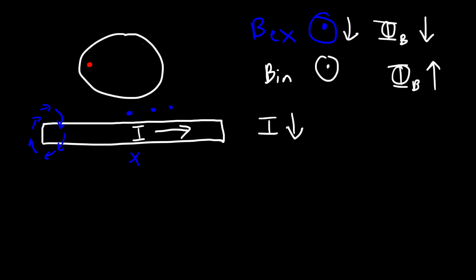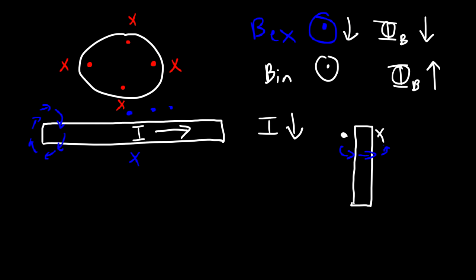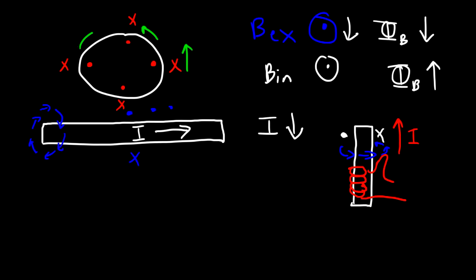So everywhere inside the coil, the induced magnetic field — shown in red — has to be coming out of the page, which means everywhere outside it's going into the page. Focusing on the left side of the coil: it's out of the page on the left, into the page on the right. The induced magnetic field needs to go in that direction. Using the right-hand rule, the fingers follow that direction and the thumb points up, so the current in this section is upward. Therefore, the current is traveling in the counterclockwise direction in this loop.